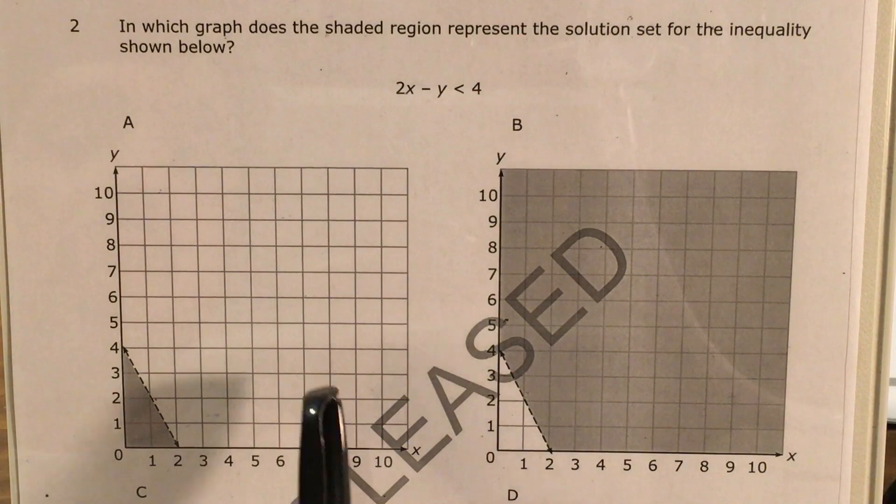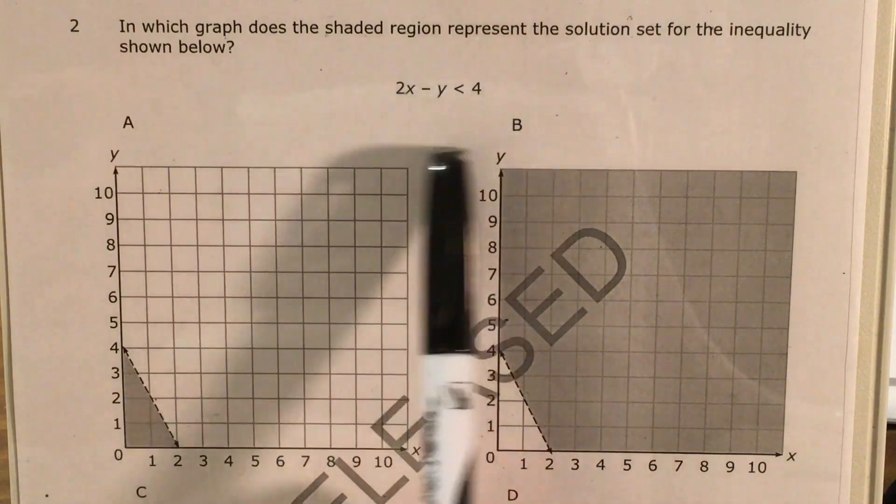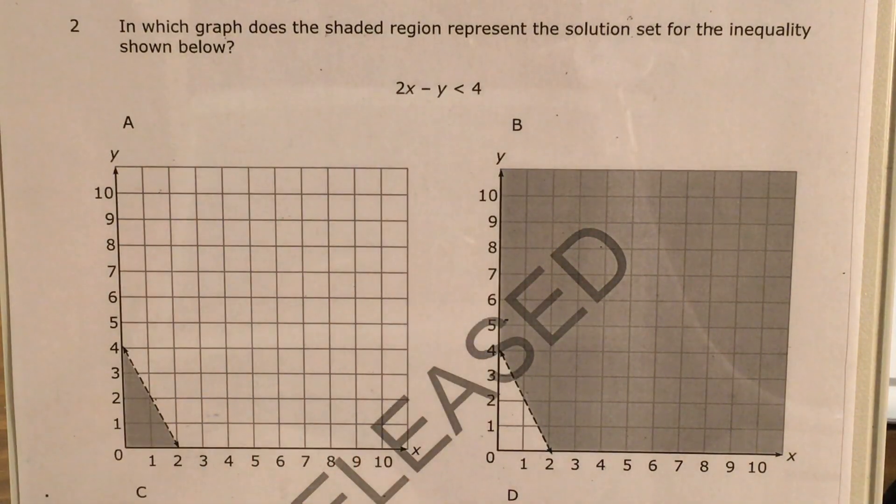Today we're going to tackle question 2 in the math 1 questions that North Carolina released this past school year. We can see that we're just looking for which graph between A, B, and then C and D are not shown yet